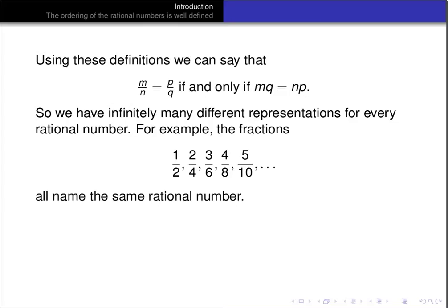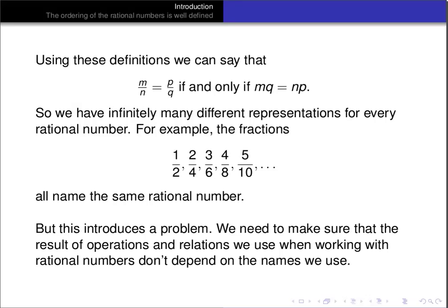We have infinitely many different representations for every rational number. So all of the fractions — 1 half, 2 quarters, 3 sixths, 4 eighths, 5 tenths — they all name the same rational number. But that introduces a complication: we need to make sure that the result of operations such as addition and subtraction, and the relations such as less than, that we use when working with rational numbers don't depend on the names we use.